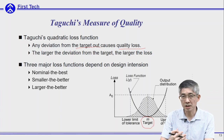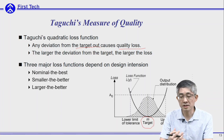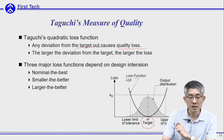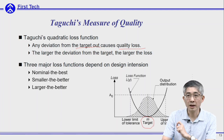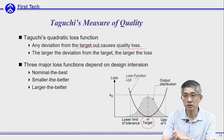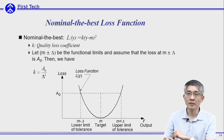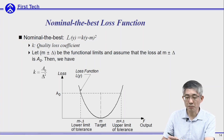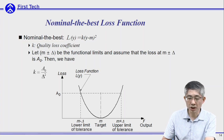In addition, based on the different characteristics of a system, he proposed three different types of loss functions: nominal-the-best, smaller-the-better, and larger-the-better. In the following sessions we will introduce these three different types of loss function.